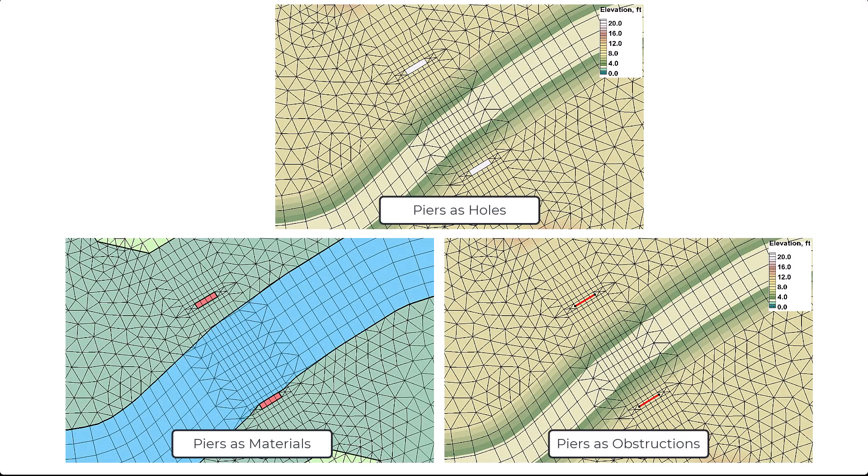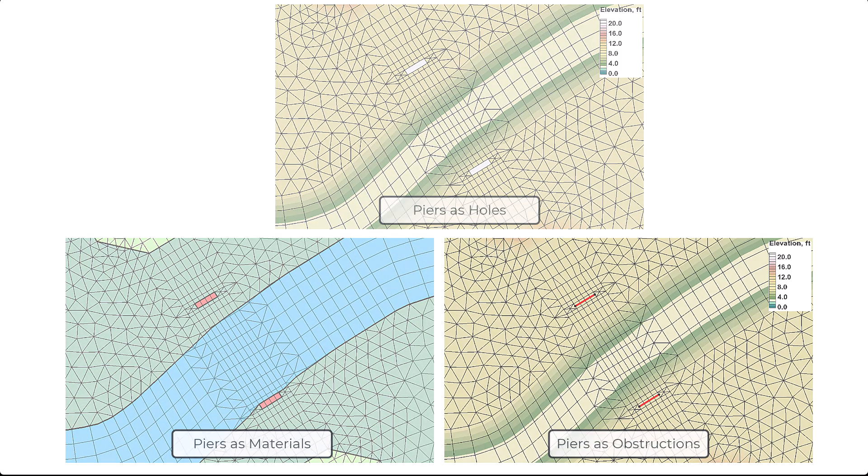These different methods of modeling piers can lead to different hydraulic conditions and flow patterns below a bridge. The modeler should consider the level of analysis that is required as well as modeling constraints when choosing which method to use.